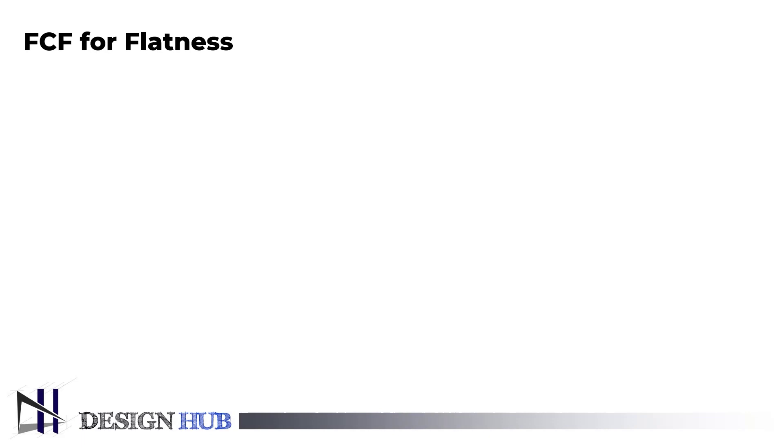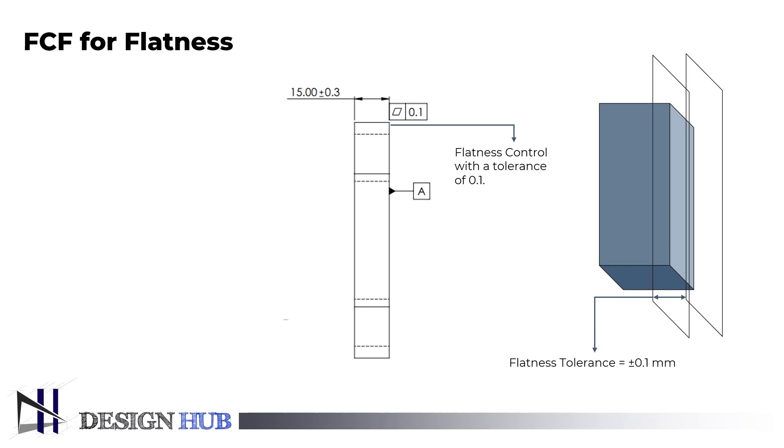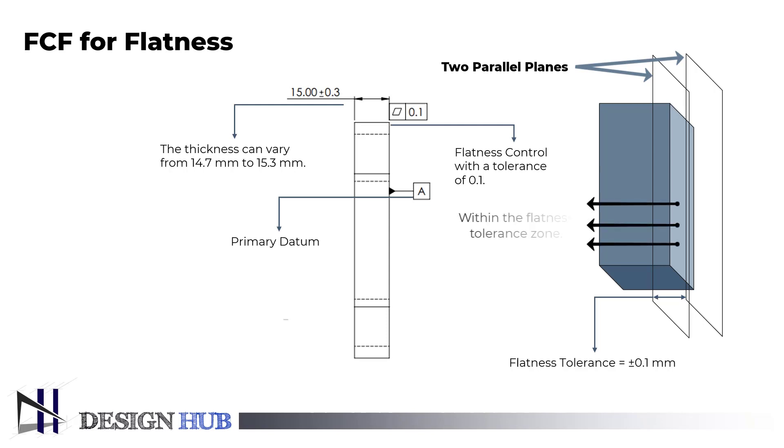Now, we will learn FCF for flatness control tolerance. Using feature control for flatness with a tolerance of 0.1, and stating that a surface must fit between two parallel planes that are spaced apart by a certain amount which is plus minus 0.1 millimeters, we can define flatness. And we have given datum A as a reference. Any two parallel planes, located anywhere and in any orientation, that will encompass the entire surface of the part are considered to be within the flatness tolerance zone. The flatness control is broken if the part's entire surface cannot be contained between two parallel planes that are only 0.1 apart. If we look at the left-hand view of the drawing, it is defined with a thickness of 15 millimeters with a size tolerance of plus minus 0.3 millimeters. So, the thickness is allowed to vary from 14.7 millimeters to 15.3 millimeters.